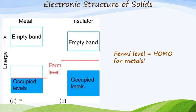One thing I do want to point out is there's a certain level in metals which we call the Fermi level. The Fermi level is the highest occupied molecular orbital for metals. So in this case, where we've got occupied levels, the highest occupied molecular orbital — this would be the Fermi level — and that is for a metal.